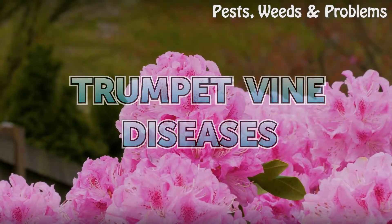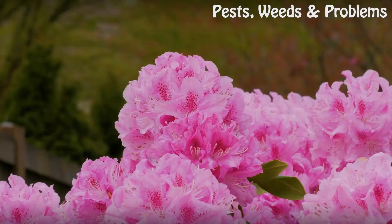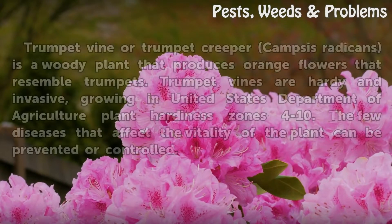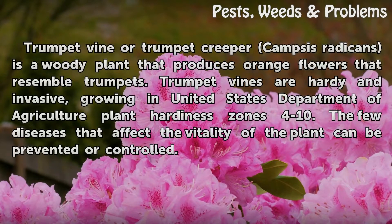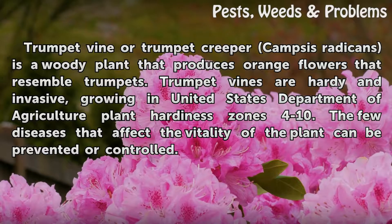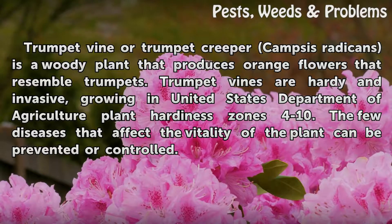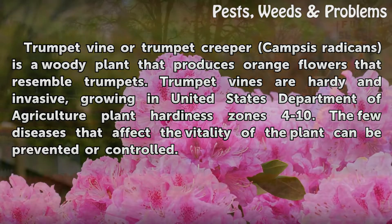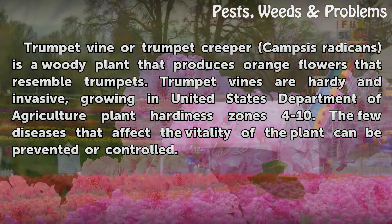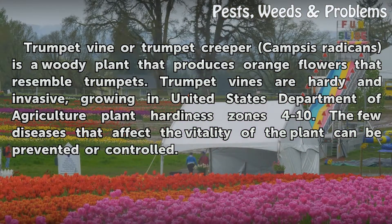Trumpet Vine Diseases. Trumpet Vine or Trumpet Creeper, Campsis radicans, is a woody plant that produces orange flowers that resemble trumpets. Trumpet Vines are hardy and invasive, growing in United States Department of Agriculture Plant Hardiness Zones 4 to 10. The few diseases that affect the vitality of the plant can be prevented or controlled.